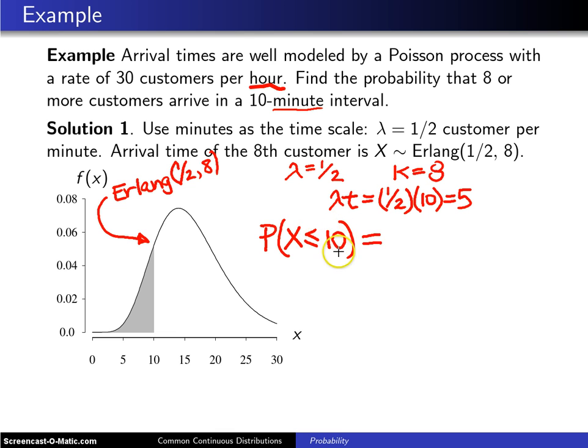That is this area, and that's what we're going after. You'll notice with X less than or equal to something, that reminds you of the CDF. So really what we want is the CDF of a gamma random variable evaluated at 10.